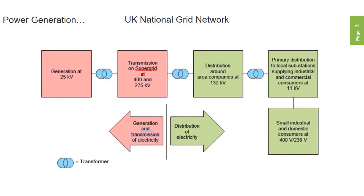the electricity is then put through large transformers and stepped up to a higher voltage of either 400,000 volts, 275,000 or 132,000 volts AC for transmission on the national grid network.